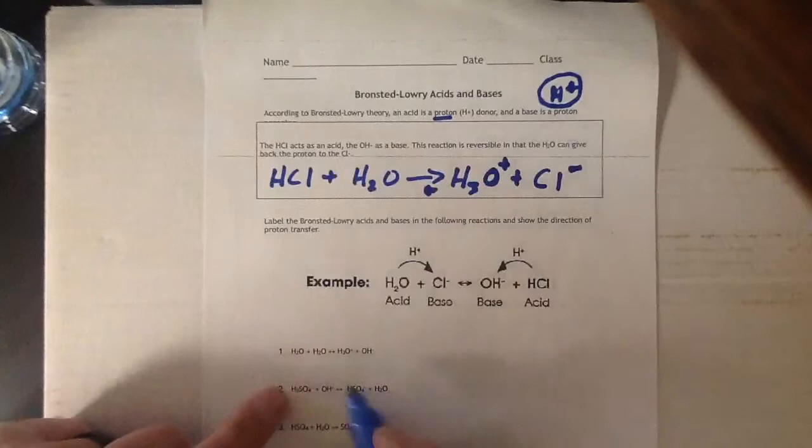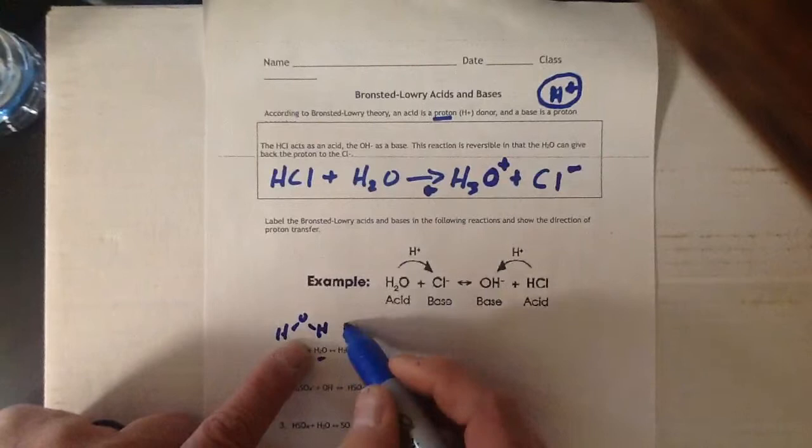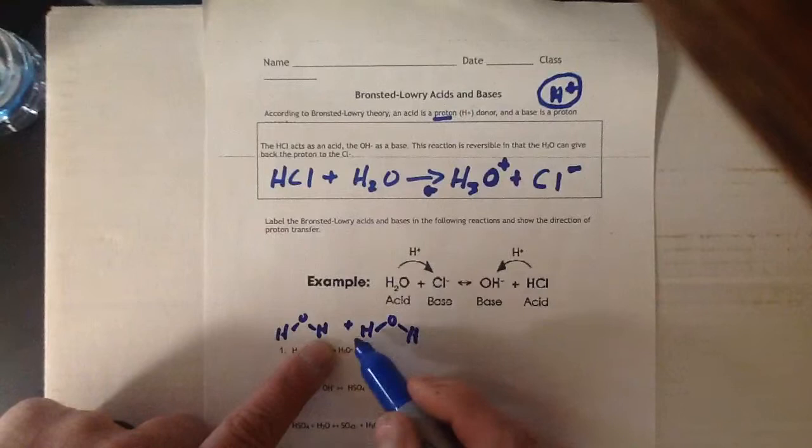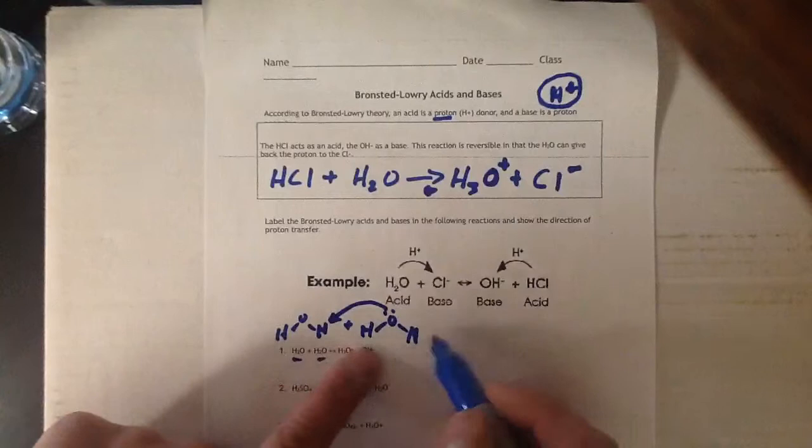So what I want you to do in this first one below is think about this donation of a proton. In this case, we have just two water molecules. One of them is going to take the H of the other, but without the electrons in the bond. We're going to draw an arrow from who's taking it.